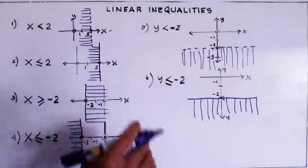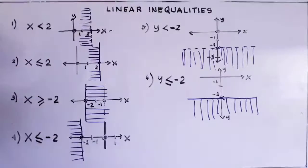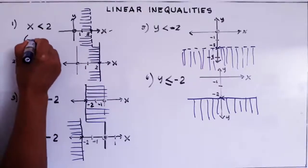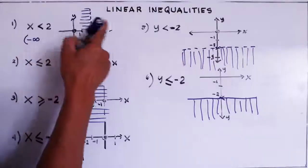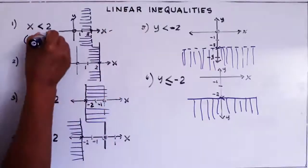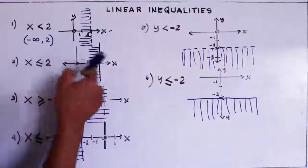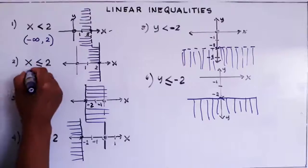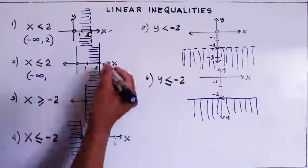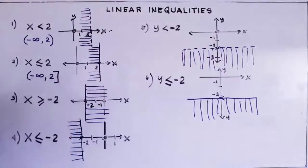We're not going to discuss the interval notation in depth here — that is another topic. But if you are going to write that one in interval notation, we have negative infinity going up to two. But the two is not included because that's dotted, and this one is inclusive. So we start from negative infinity to two, and since two is included, we put a bracket there.